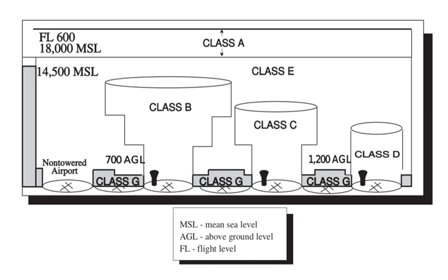Class A airspace extends from 18,000 feet MSL to FL-600 (approximately 60,000 feet) throughout the continental United States and Alaska. Unlike other airspace classes, the FL-NNN flight levels used in Class A are pressure altitudes referenced to a standardized altimeter setting of 29.92 Hg, so true altitudes depend on local atmospheric pressure variations. Unless otherwise authorized by ATC, all flight operations in Class A airspace must be under ATC control, operating IFR, under a clearance received prior to entry.